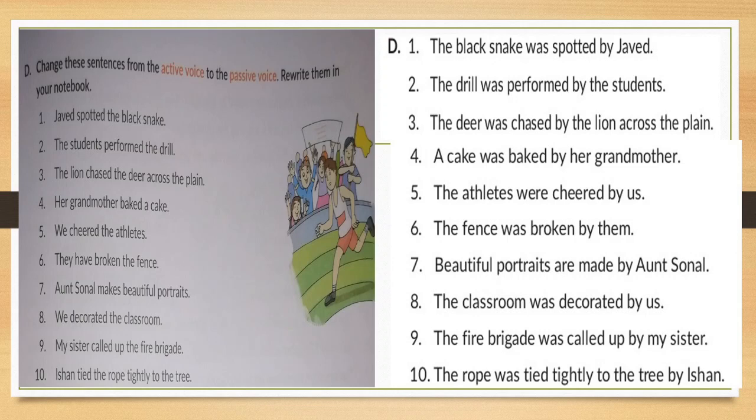Next: 'The drill was performed by the student.' Again, it belongs to the past simple. 'The deer was chased by the lion across the plain.' Here your subject and object swap. 'A cake was baked by her grandmother.' 'The athletics were chilled by us.' Again, past simple. 'The fence was broken by Dan.' 'Beautiful portraits are made by Aunt Sonal.' 'The classroom was decorated by us.' In place of 'we,' 'us' will come in passive voice.